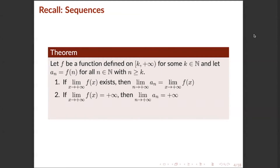Number 2: if lim(x→+∞) f(x) = +∞, then lim(n→+∞) a_n = +∞ as well. Number 3: if lim(x→+∞) f(x) = −∞, then lim(n→+∞) a_n = −∞.